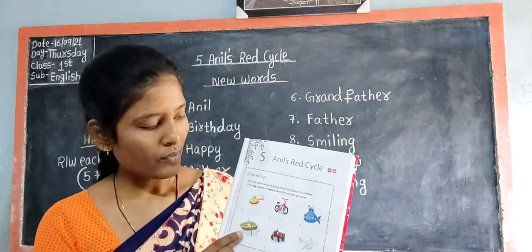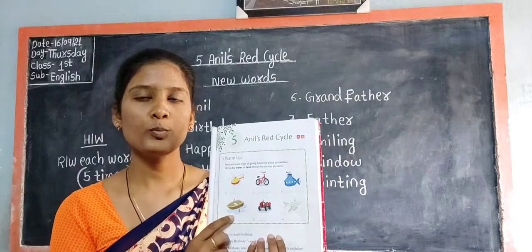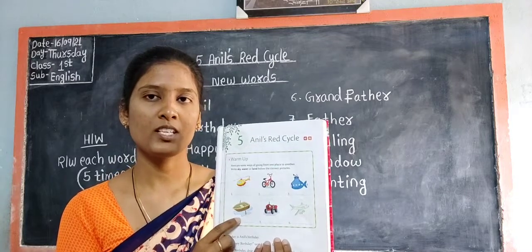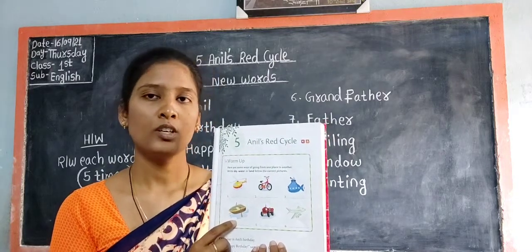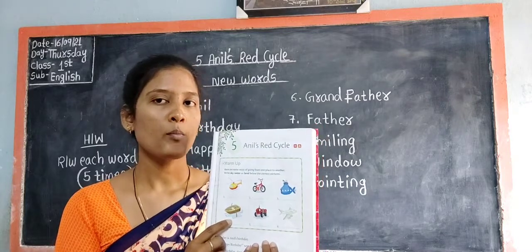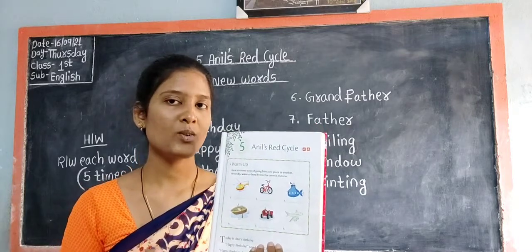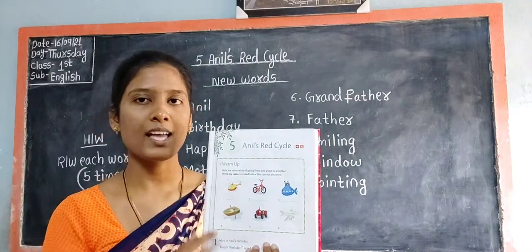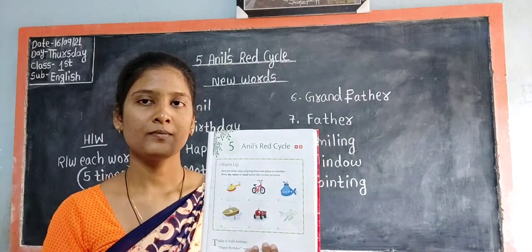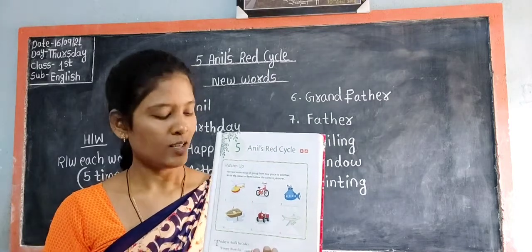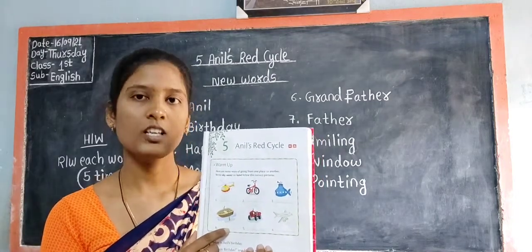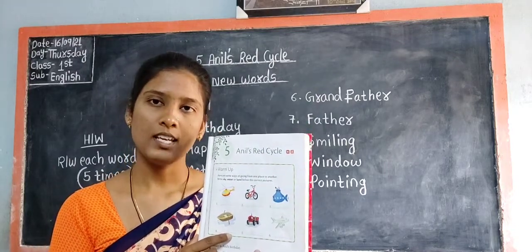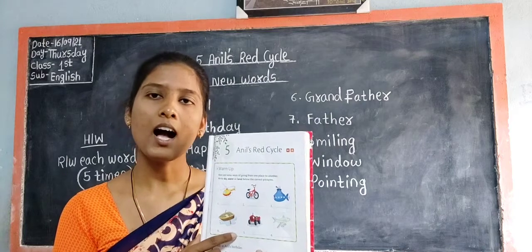Look at the fourth picture children. What can you see in the fourth picture? The fourth picture is of a boat. So tell me children, through which way does a boat move from one place to another — sky, water, or land? Water. So write water in the blank: W-A-T-E-R. Water.